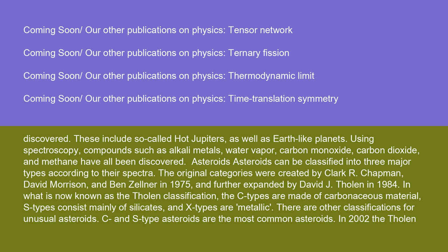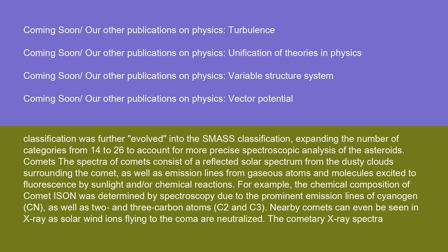Asteroids can be classified into three major types according to their spectra. The original categories were created by Clark R. Chapman, David Morrison, and Ben Zellner in 1975 and further expanded by David Tholen in 1984. In what is now known as the Tholen classification, C-types are made of carbonaceous material, S-types consist mainly of silicates, and X-types are metallic. There are other classifications for unusual asteroids. In 2002, the Tholen classification was further evolved into the SMASS classification, expanding the number of categories from 14 to 26 to account for more precise spectroscopic analysis of the asteroids.